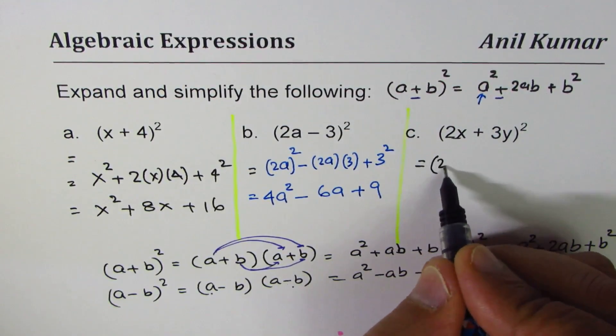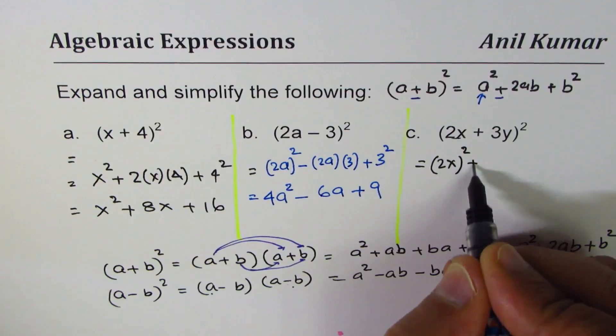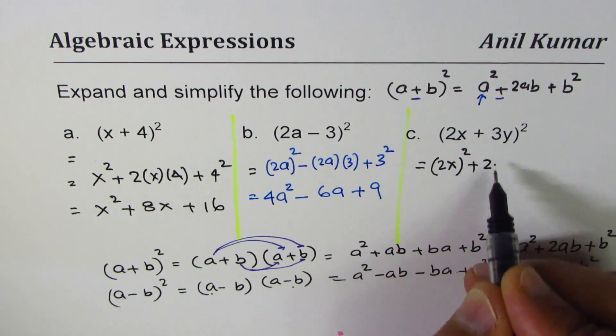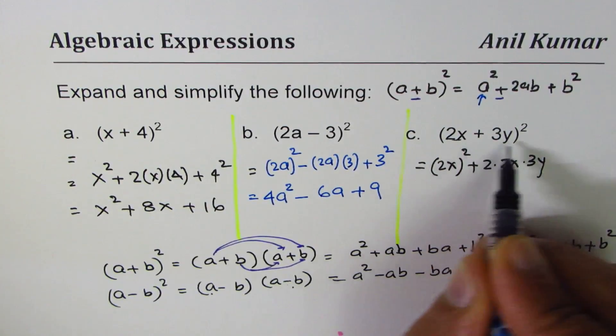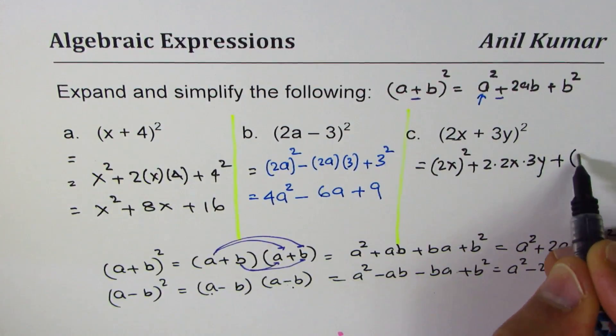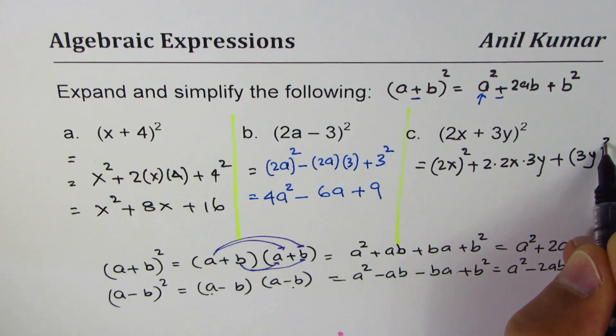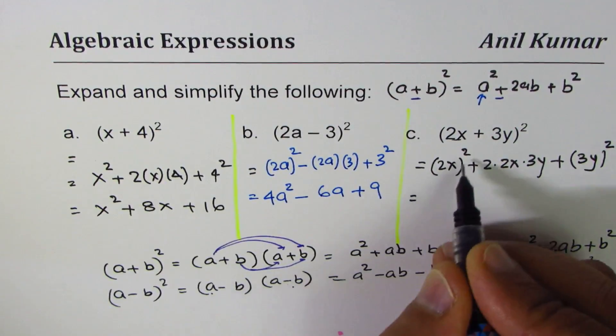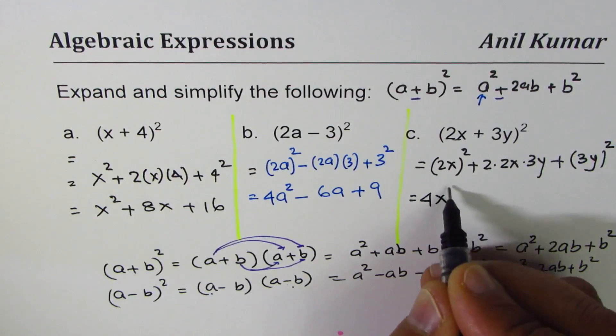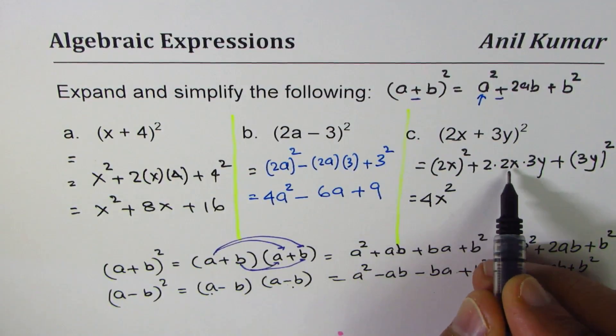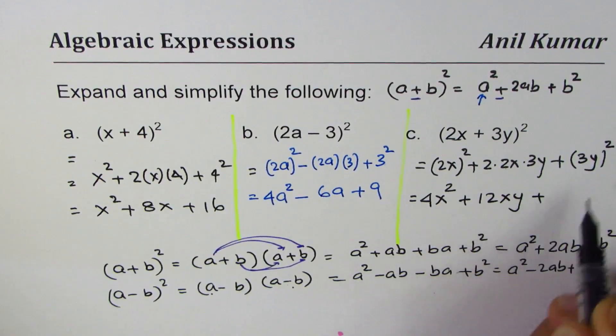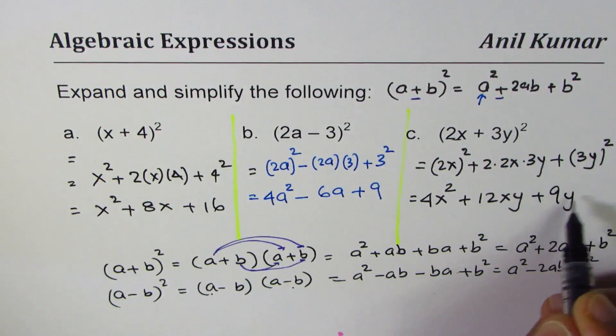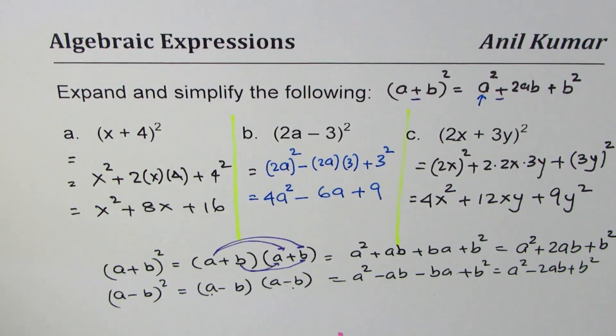So square of 2x that's the first term plus 2 times product of these, 2 times 2x times 3y plus 3y whole square, 3 needs to be squared. 2 squared is 4, so we get 4x squared. 2 times 2 is 4, 4 times 3 is 12, so we get 12xy. And here we get 9y squared. So that is the way it has to be done.